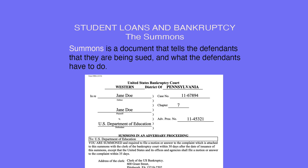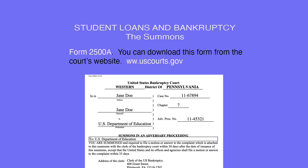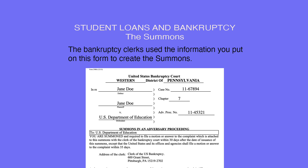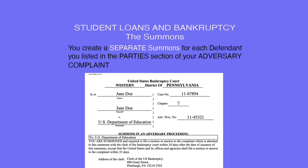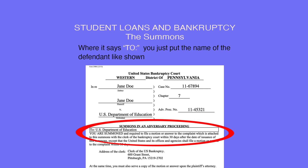A Summons is a document that tells the defendants that they are being sued and what the defendants have to do. Use Form 2500A, which you can download from the court's website at www.uscourts.gov. The bankruptcy clerks use the information you put on this form to create the summons. After the clerks create the summons, they will provide you with a copy that you mail to each defendant. You create a separate summons for each defendant listed in the party section of your adversary complaint. Where it says 'To,' put the name of the defendant as shown.